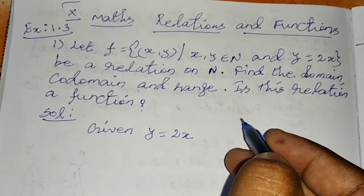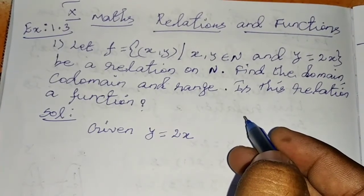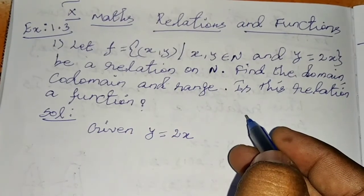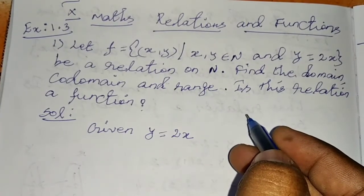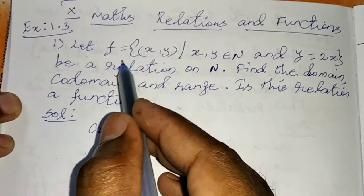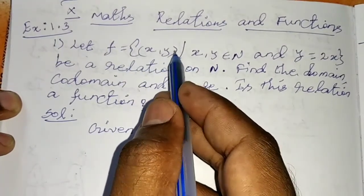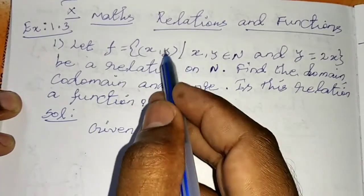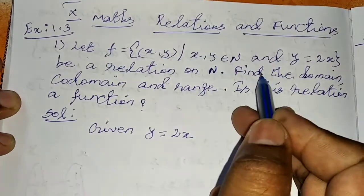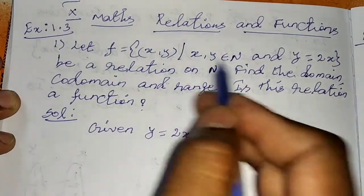Dear students, in this video we are watching 10th Maths Relations and Functions, Exercise 1.3, sum number 1. See the question: let f = {(x, y)} such that x, y is a relation where x, y belongs to N and y = 2x.